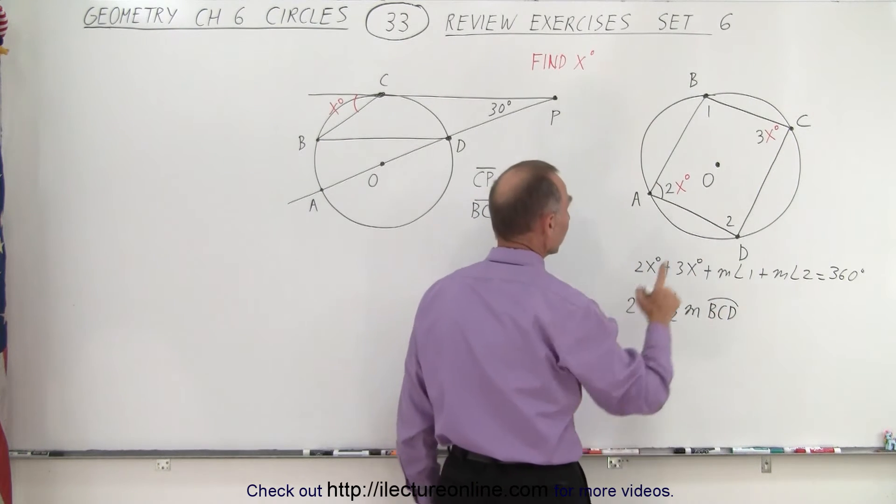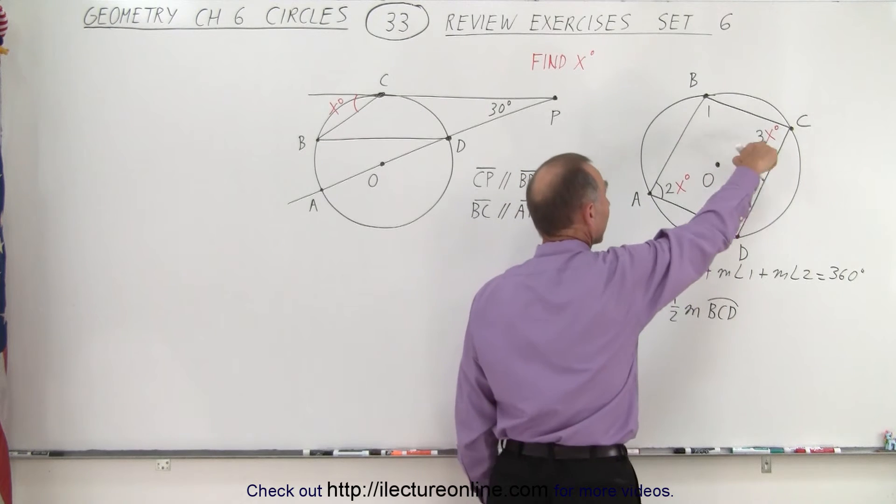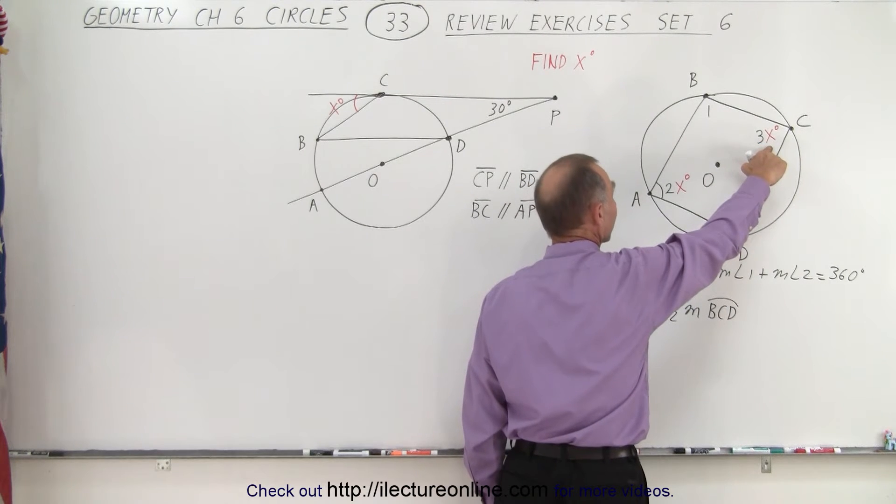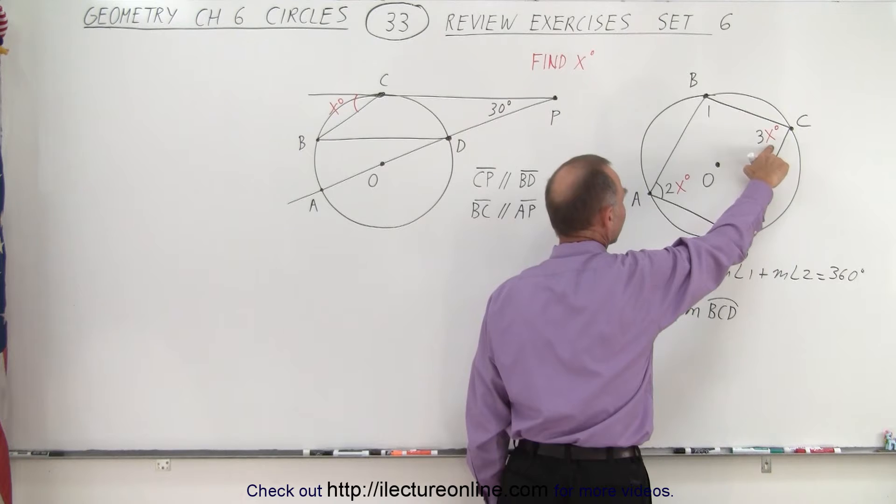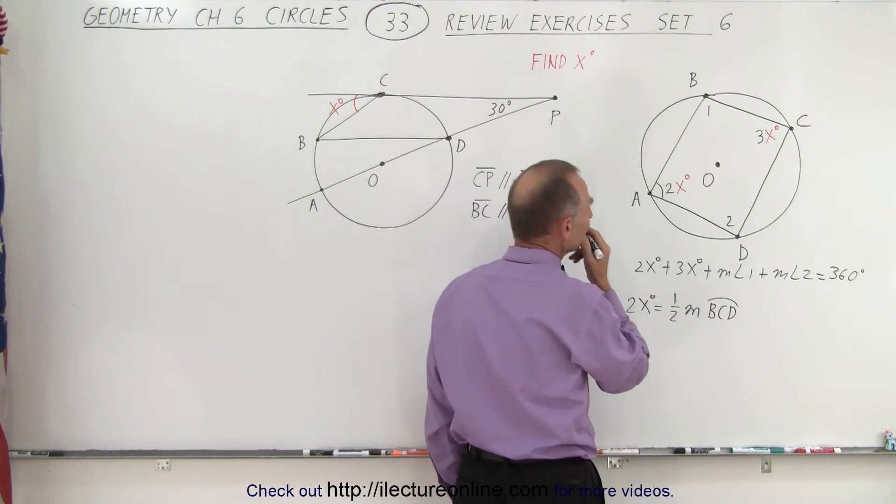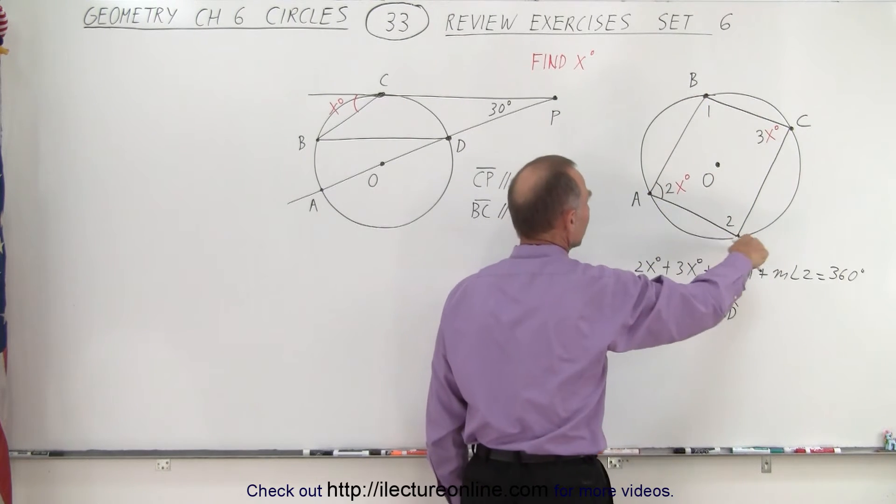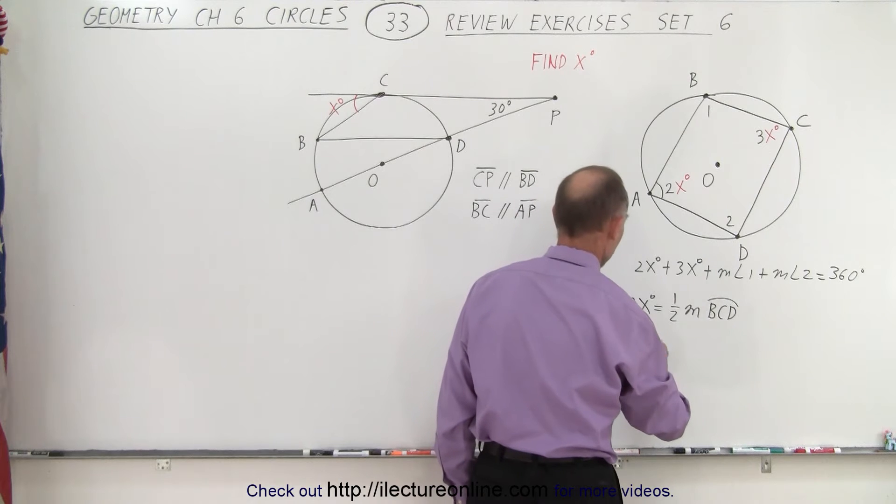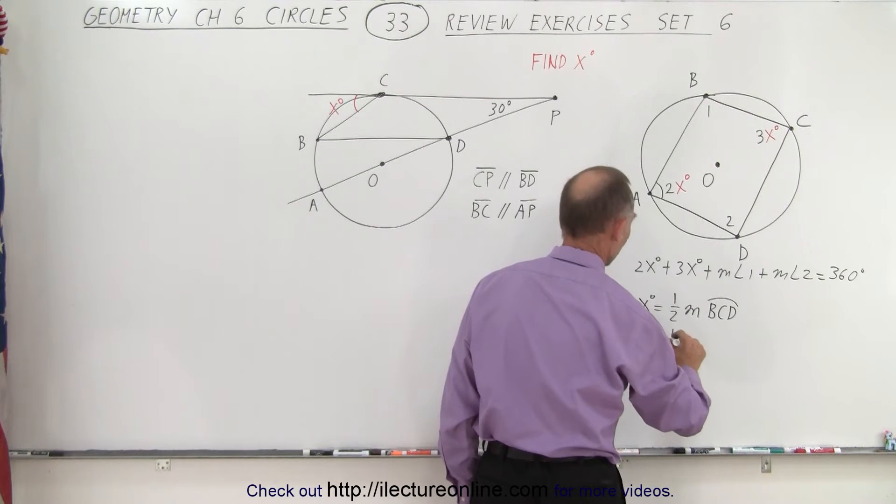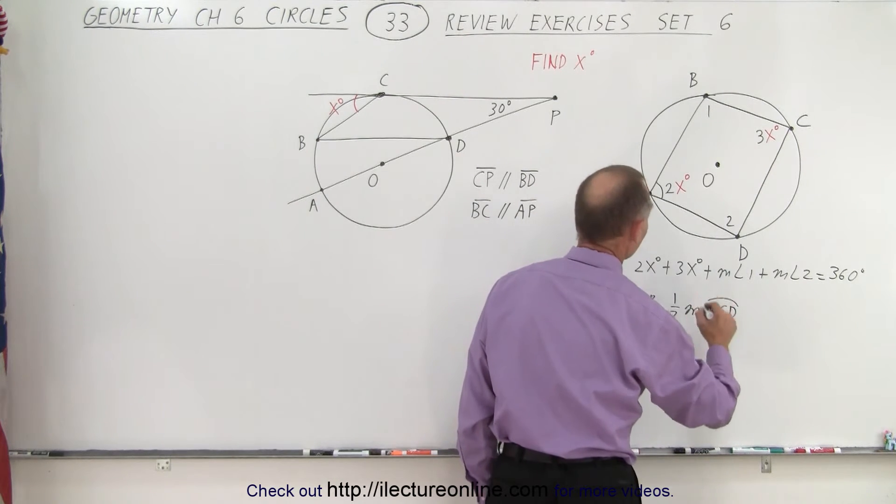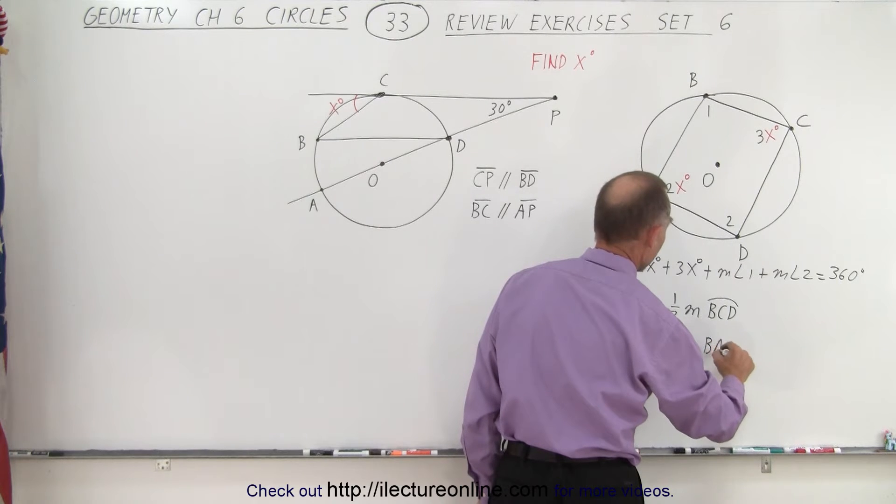We can also say that the measure of 3x degrees is equal to the measure of the arc length from B to A to D. So 3x is equal to one half the measure from B to A to D.